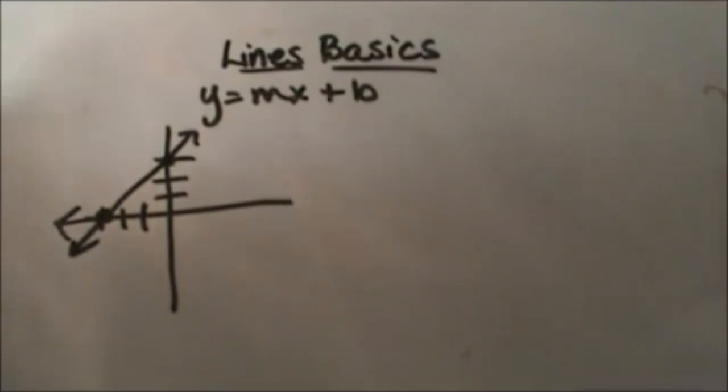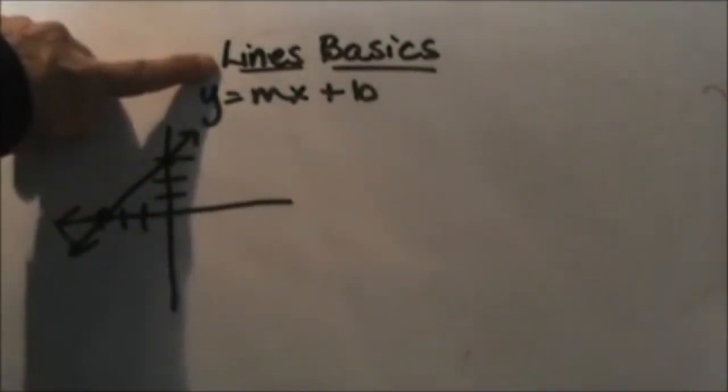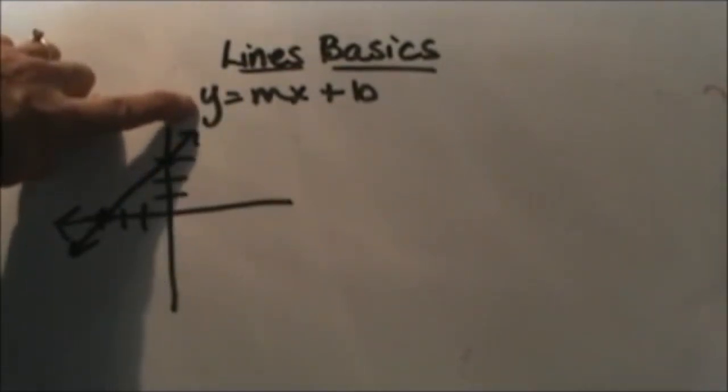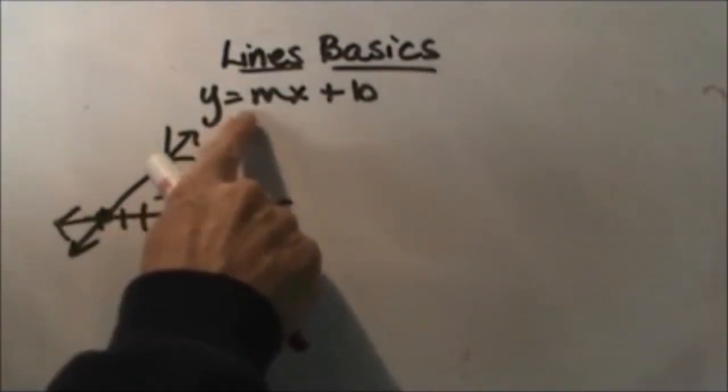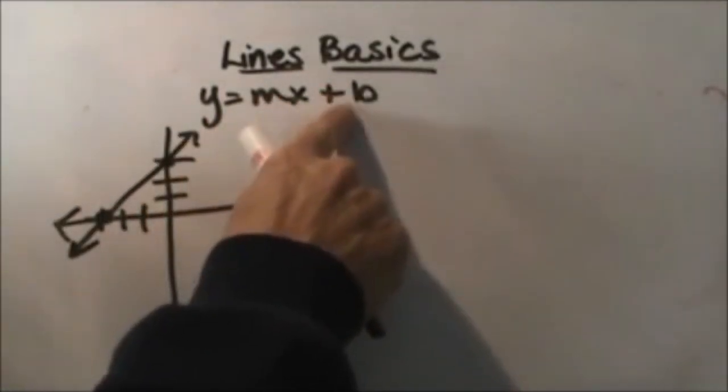Today we're going to look at lines and just the basic concept of the equation of a line. We usually try to write the line in what we call y-intercept form, which is in the form y equals mx plus b.